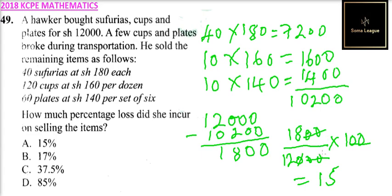That is a 15%. So that is the percentage loss that the hawker made out of the items that she sold.